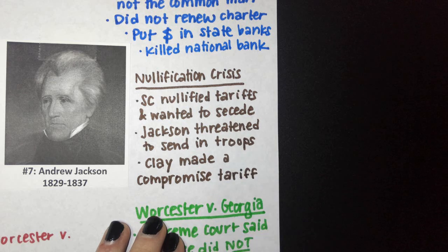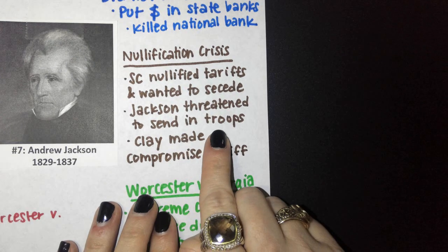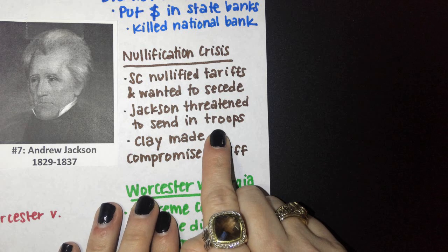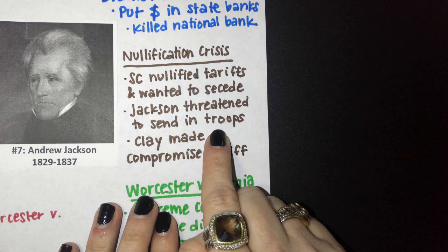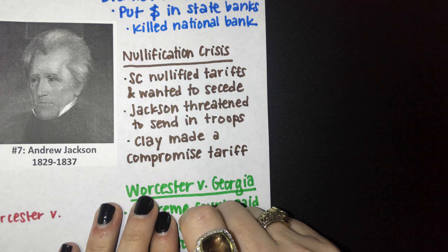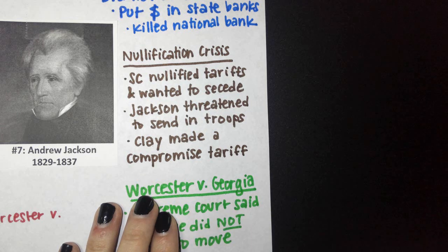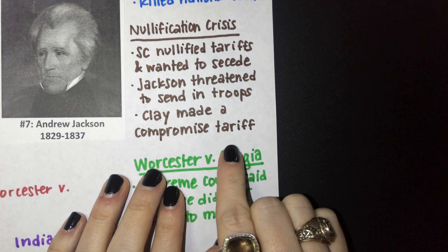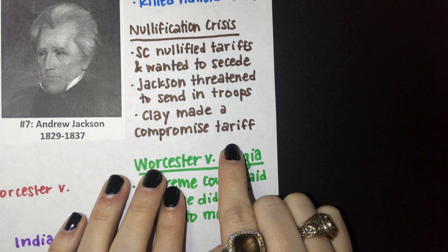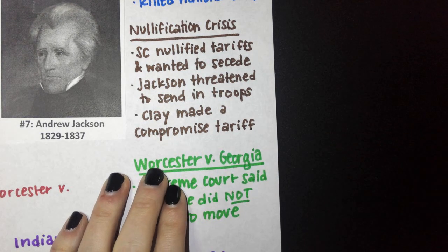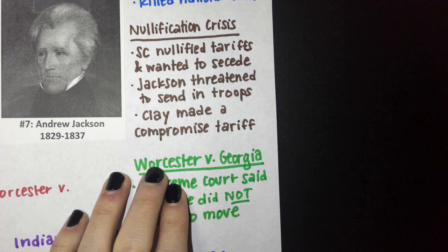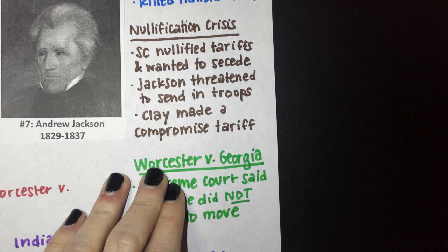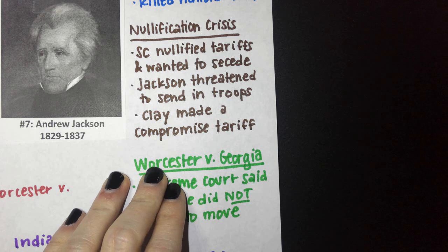Jackson was very angry about this. He threatened to send in the troops and even threatened to hang his vice president, John C. Calhoun, who was a South Carolinian and had encouraged South Carolina to nullify the tariffs. Before a civil war could break out, Henry Clay — the great compromiser — came to the rescue. He made a compromise tariff, agreeing that southern states would still pay the tariff on imports, but the amount would be reduced each year.